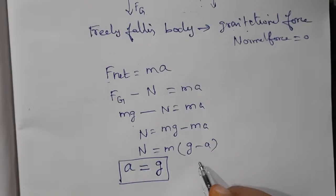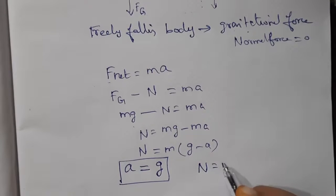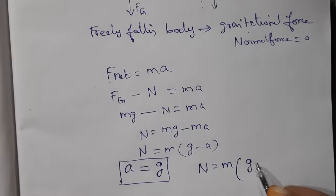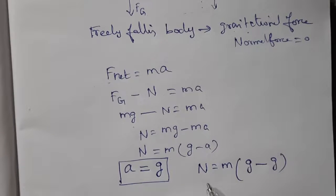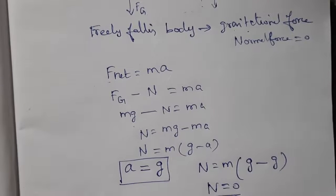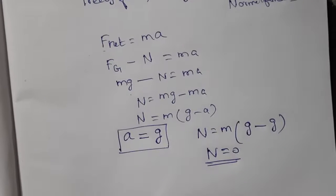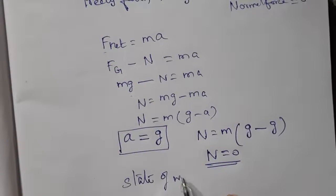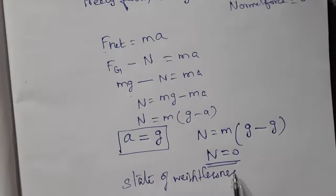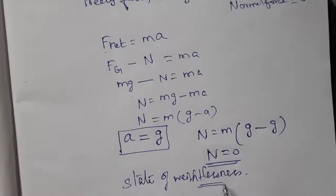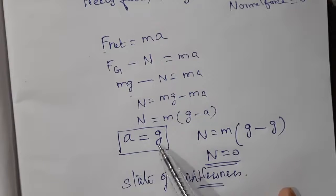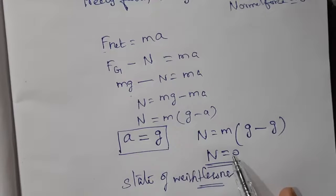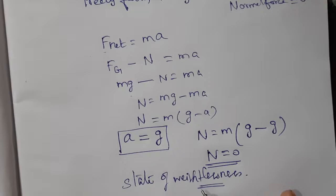For a freely falling body, the downward acceleration equals the acceleration due to gravity: a = g. Substituting into N = m(g − a), we get N = m(g − g) = m × 0 = 0. So N equals zero. This is called the state of weightlessness — when the body falls freely with acceleration equal to g, its weight becomes zero.